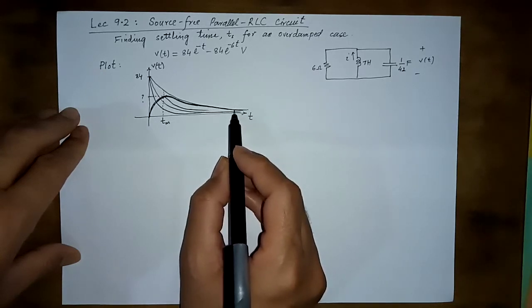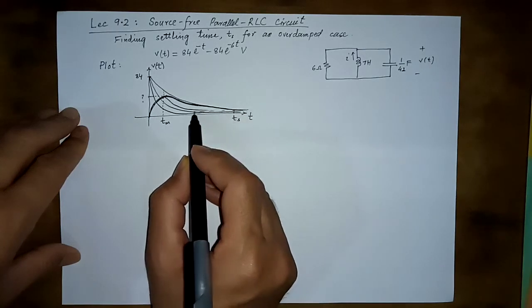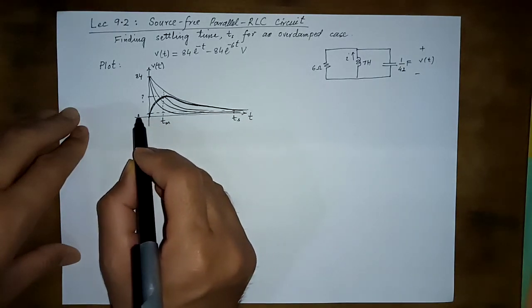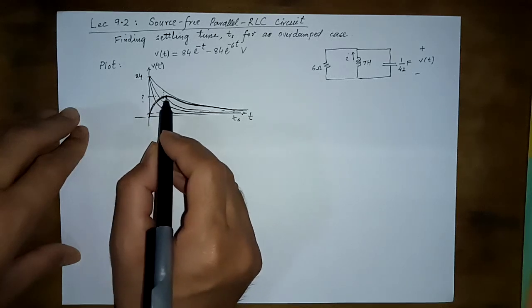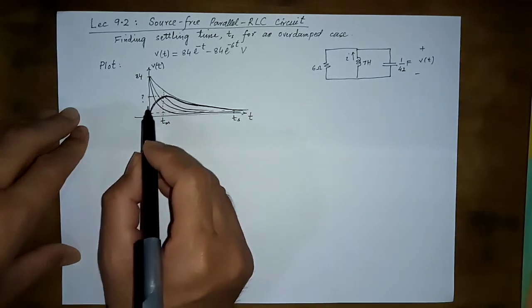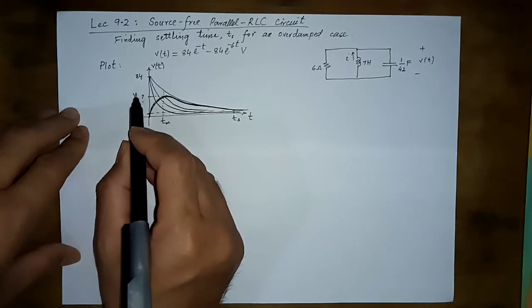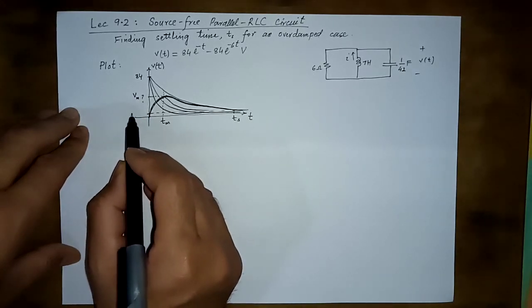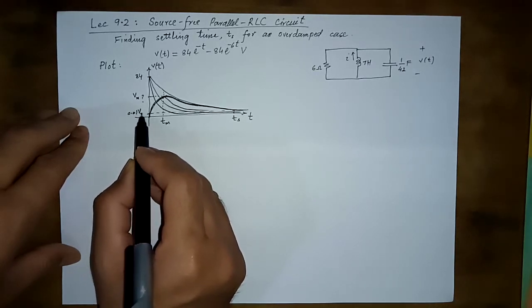When this variation going up and coming down ultimately vanishes, there is a time, settling time. By definition it is the time where the output or the response is less than one percent of the max. So suppose this is the V max, then this must be 0.01 V max.